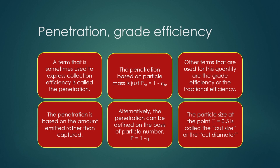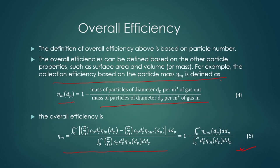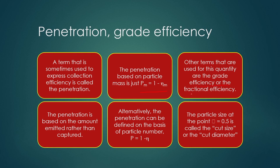Collection efficiency of equipment can also be referred to by other terms like penetration or grade efficiency. The penetration based on particle mass is p_m = 1 minus eta_m. Other terms used for this quantity are grade efficiency or fractional efficiency. The penetration is based on the amount emitted rather than captured. Penetration can also be defined on the basis of particle number: p = 1 minus eta.